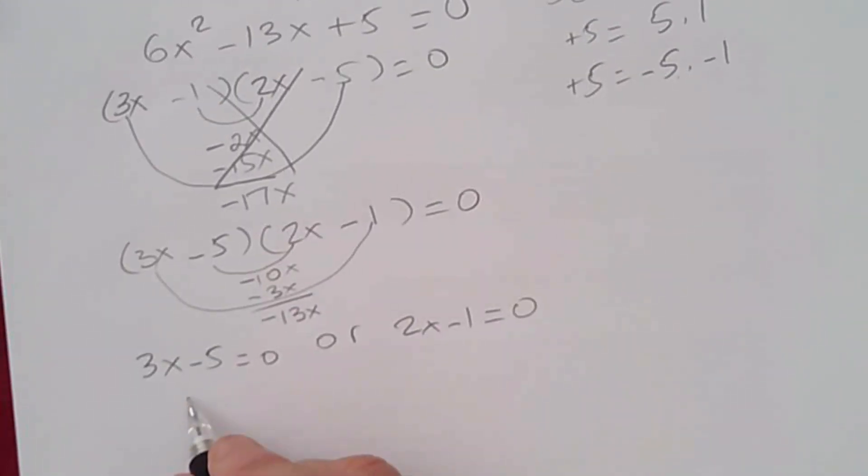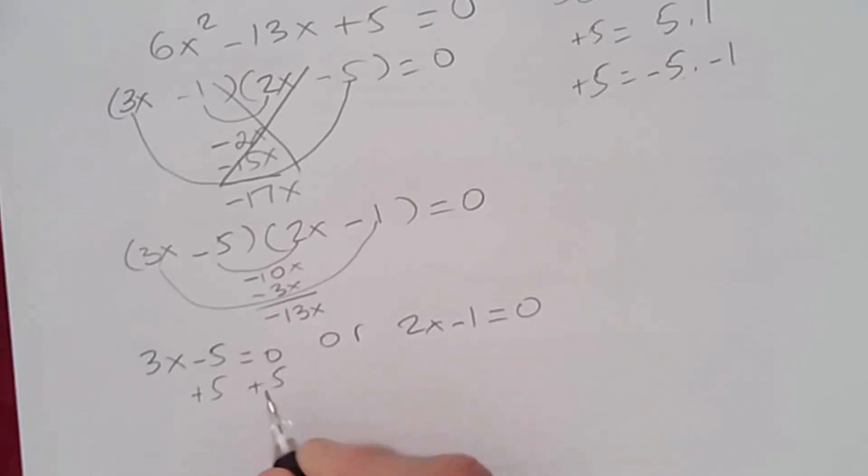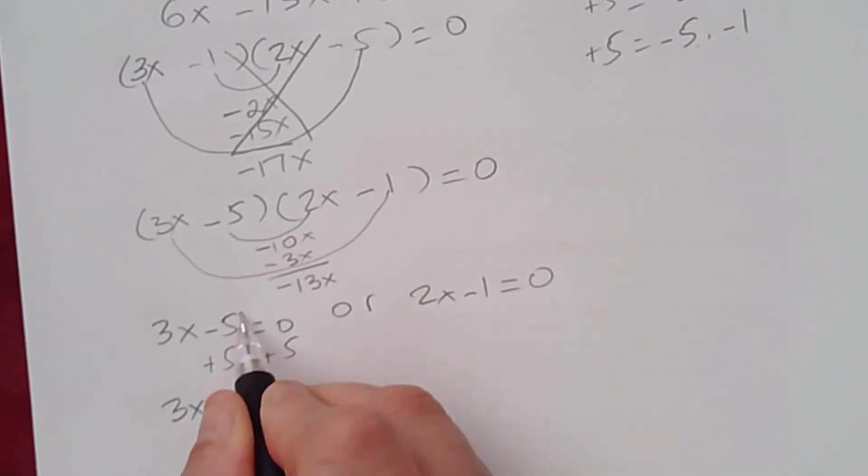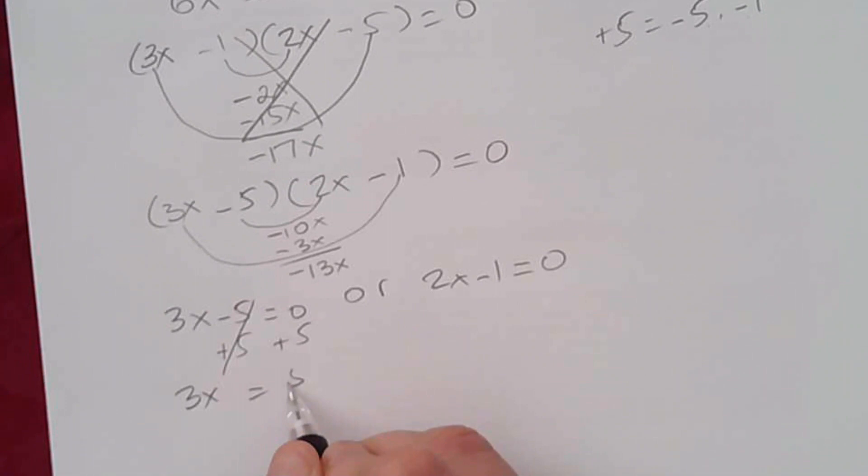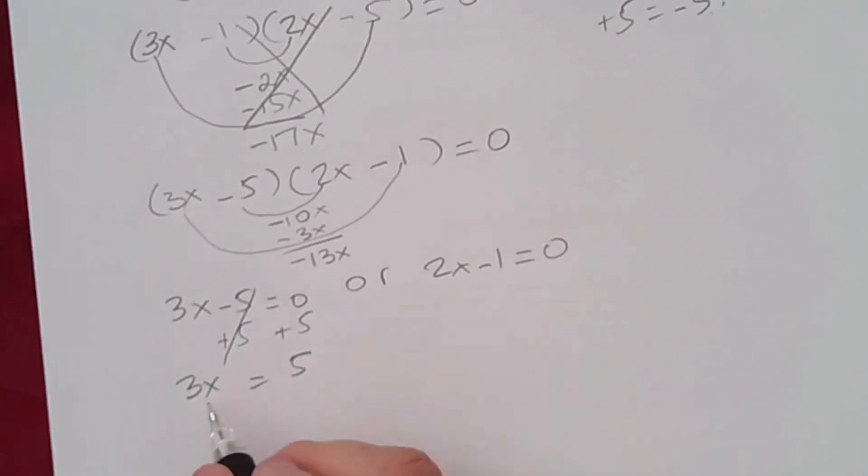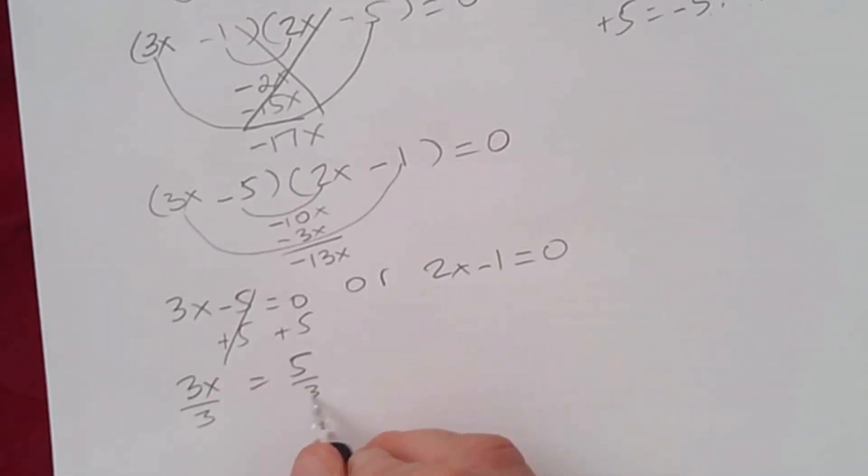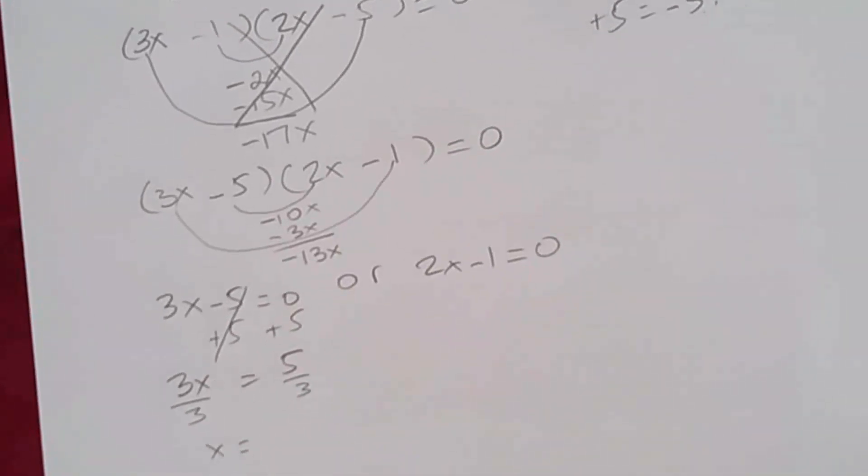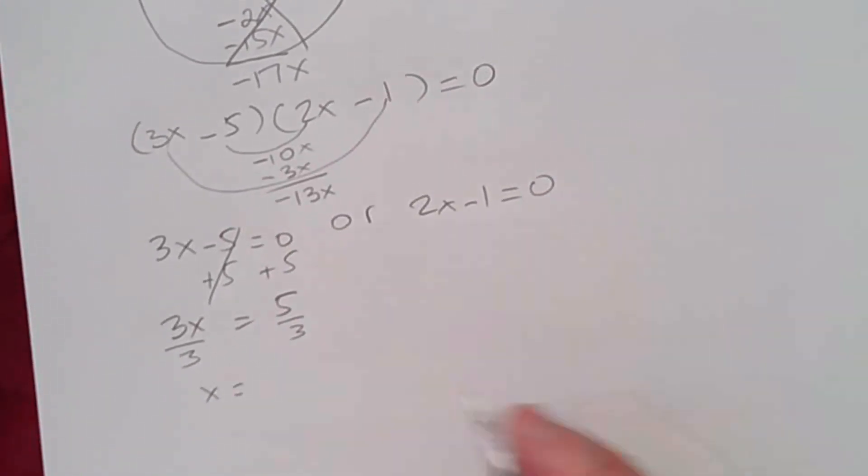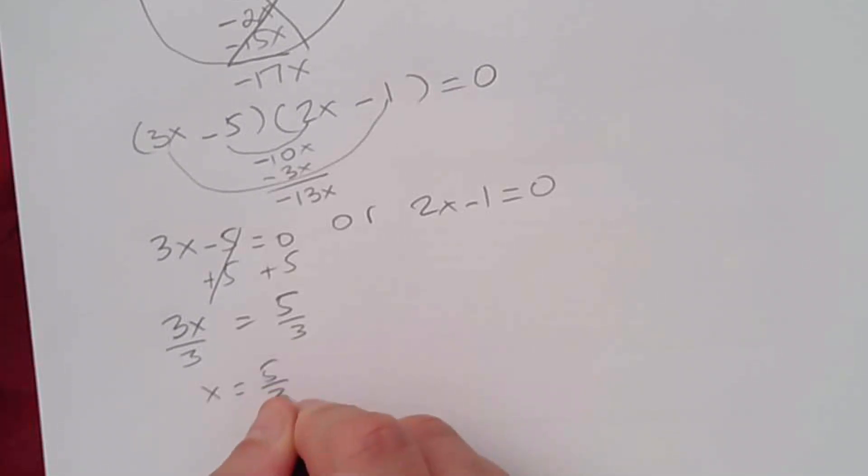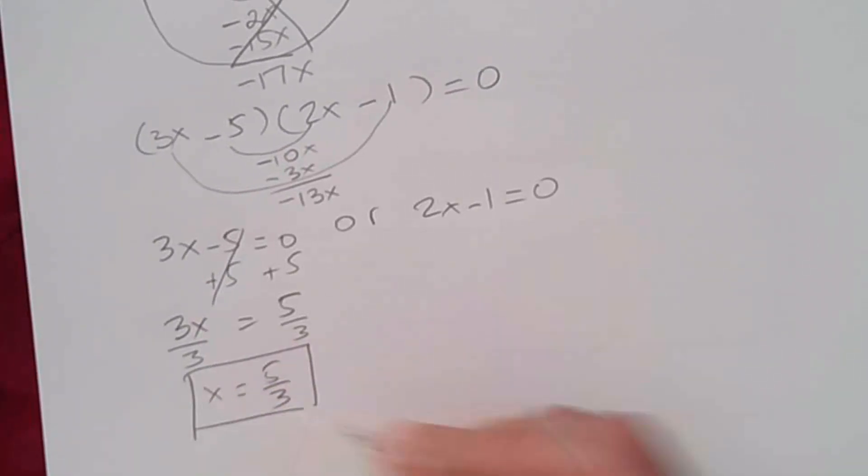Now, solving for x, we add 5 on both sides. We get 3x, this cancels, and you're left with 5 here. And you divide by 3 on both sides. And x is going to be 5 over 3. So we have a solution that's a fraction, which is okay, or improper fraction in this case.